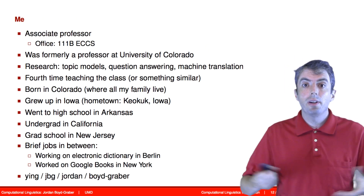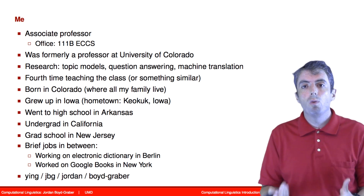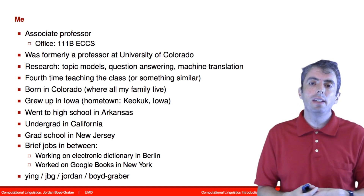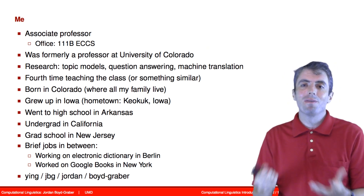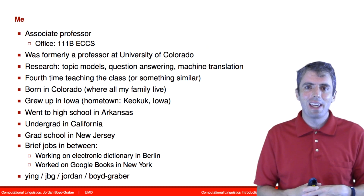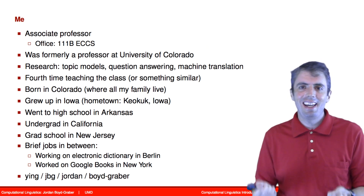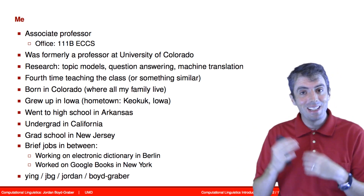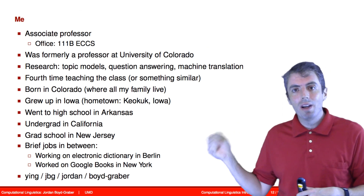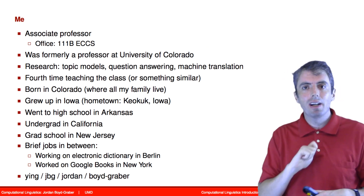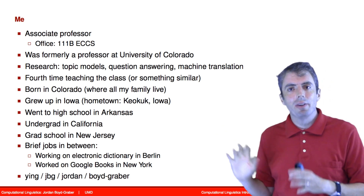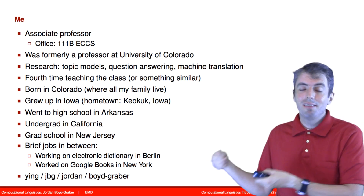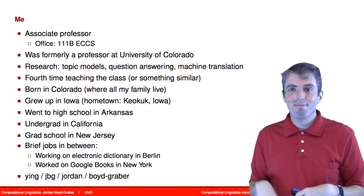I'm looking forward to getting to know you on the first day of class. But before then, I want to introduce myself a little bit. My name is Jordan — please call me Jordan, or if you want to be more formal, Professor Jordan is also okay. I don't particularly like my last name, Boyd-Graber, so I prefer not to be called that, though people cite me as that. One thing that causes confusion is that my UMD directory ID is Ying, Y-I-N-G — that's my family name and also my UMD email, so if you see 'ying,' that's me.